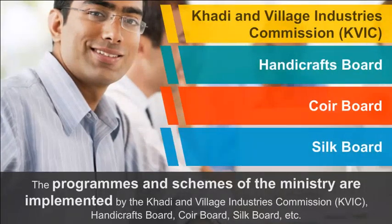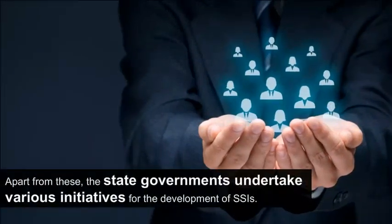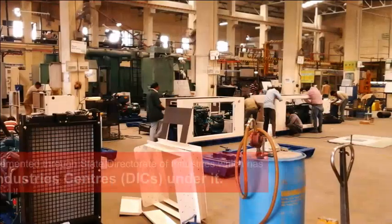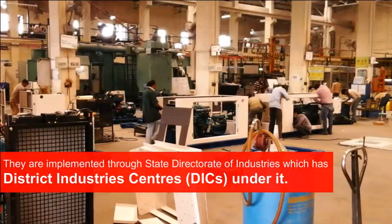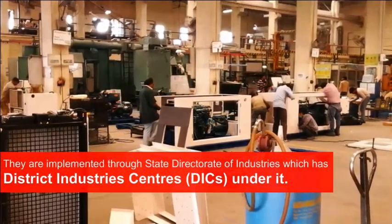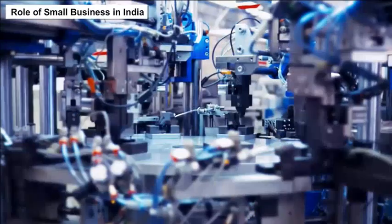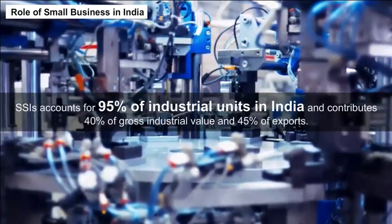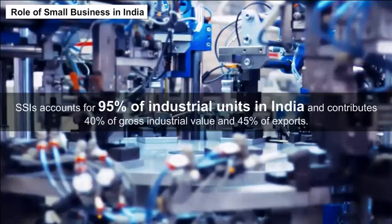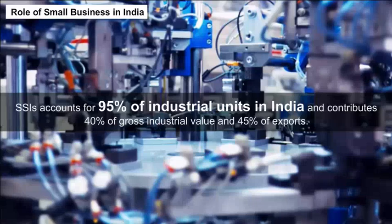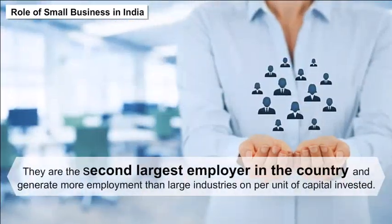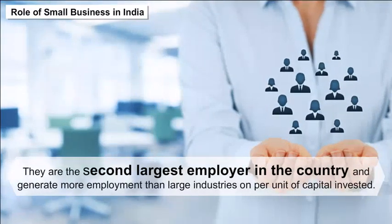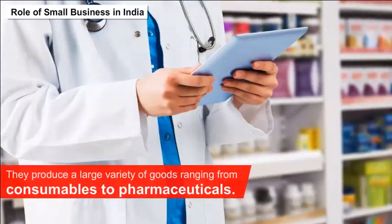Apart from these, state governments undertake various initiatives for the development of SSIs, implemented through State Directorates of Industries, which have District Industries Centers (DICs) under them. Role of Small Business in India: SSIs account for 95% of industrial units in India, contribute 40% of gross industrial value and 45% of exports. They are the second largest employer in the country and generate more employment than large industries per unit of capital invested. They produce a large variety of goods, ranging from consumables to pharmaceuticals.